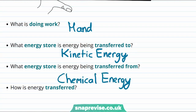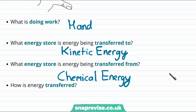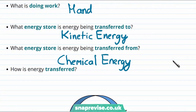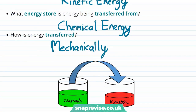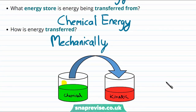Finally, we ask how was the energy transferred? Well, when we push or pull on something, we say that the energy has been transferred mechanically. And here we've drawn a picture to help us imagine the energy being transferred from the chemical energy of the muscles in our hand to the kinetic energy of the block on the table.